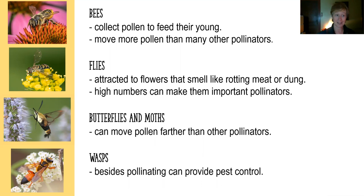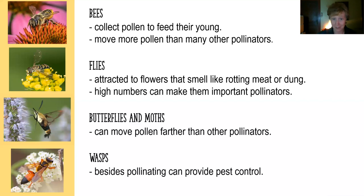Flies are a good example of that — they go to flowers collecting nectar. Many flies are most attracted to flowers that smell like rotting meat or dung, because flies often lay their eggs in such materials. However, flies do end up on flowers a lot and move a great deal of pollen, especially because they can be present in high abundances. We're learning more about how important flies are for both crop pollination and wild pollination.